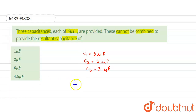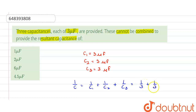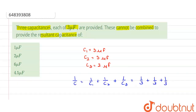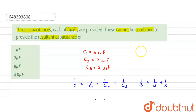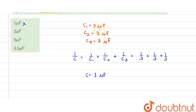If we combine these capacitors in series, the resultant capacitance is given by 1/C = 1/C1 + 1/C2 + 1/C3, which equals 1/3 + 1/3 + 1/3. So C equals 1 microfarad. This can be the resultant capacitance, so 1 microfarad is not the required answer.